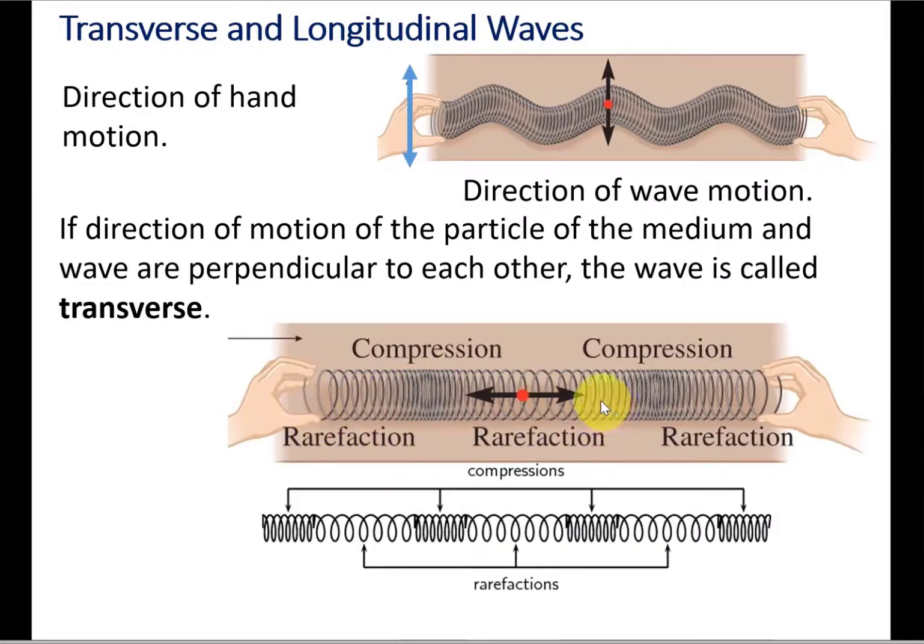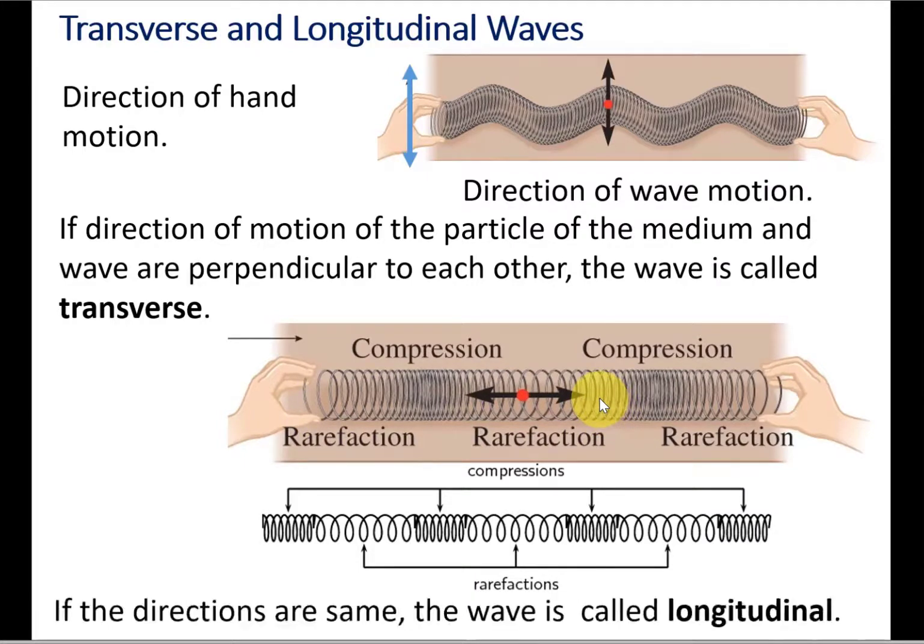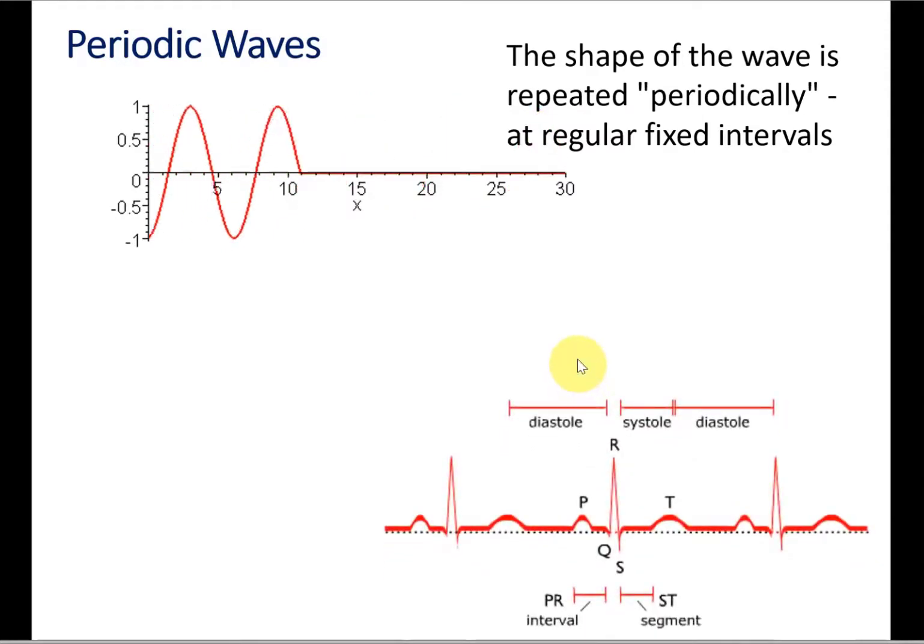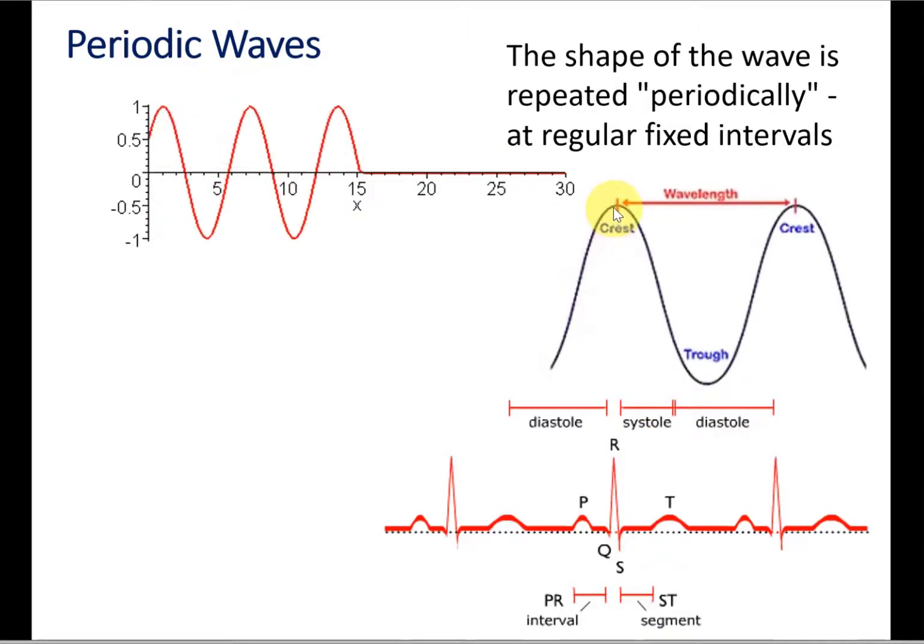The animation shows a wave where the pattern is periodically repeated. Our heartbeat also produces periodic waves, as you can see the repeated pattern in an EKG. The distance from one crest to the next crest is called wavelength, and it can be from trough to trough as well.